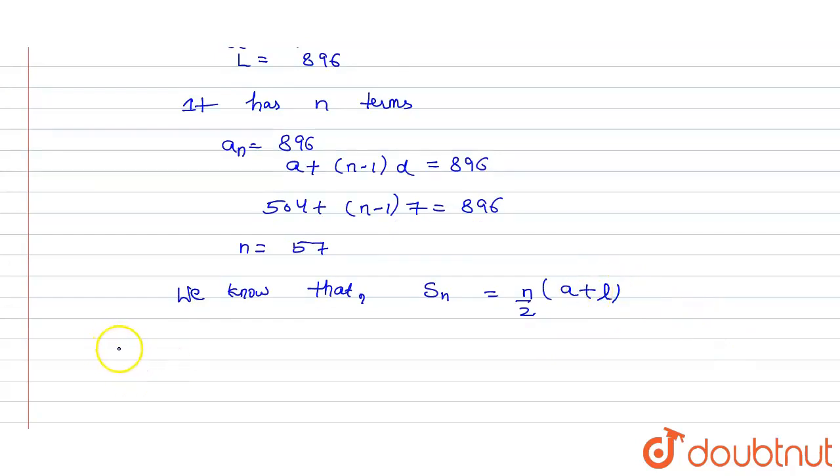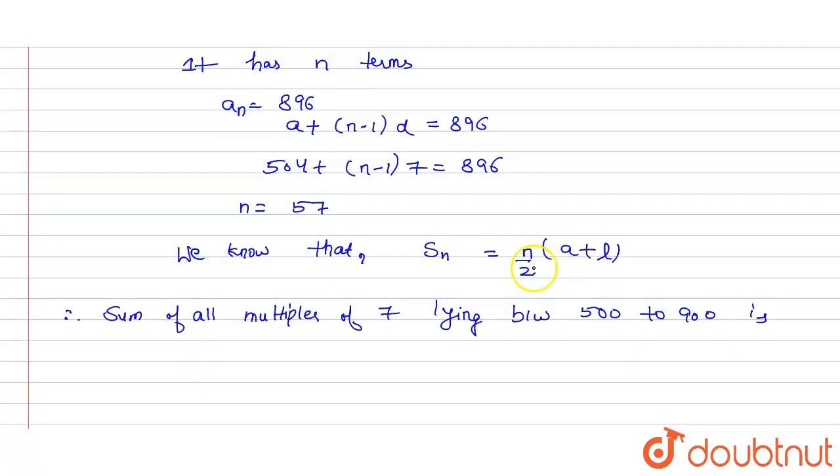Therefore, sum of all multiples of 7 lying between 500 to 900 is, putting the value of N, A and L in this formula, we will get sum of all multiples of 7 lying between 500 to 900.